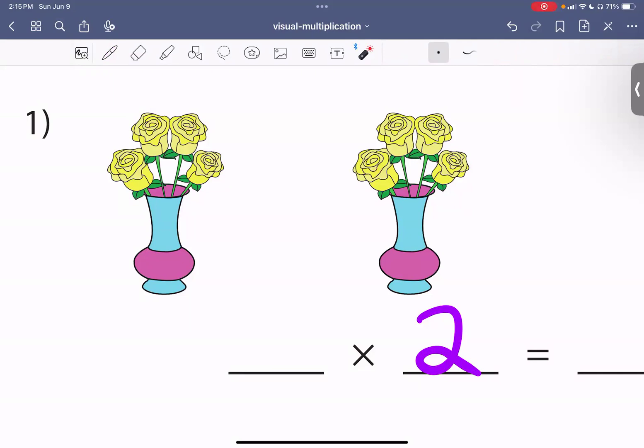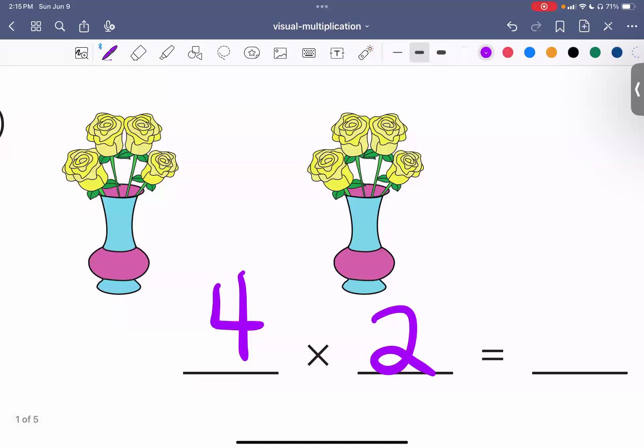Here, we have one, two, three, four. Each vase has four yellow flowers. We have four yellow flowers times two. If I count all of the yellow flowers, so this is four, five, six, seven, eight. I have a total of eight yellow flowers.